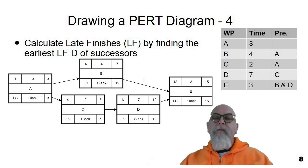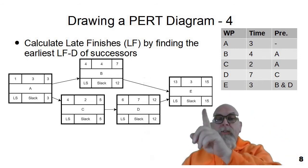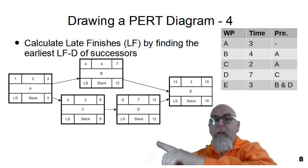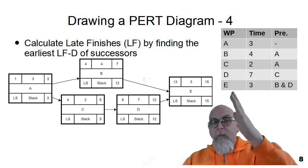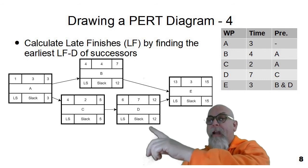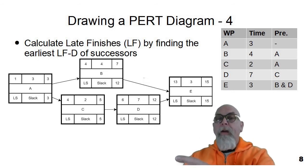To calculate the late finishes, we start at the end of the diagram and work our way backwards. So fifteen minus three would be twelve. And you see the twelve there and also the twelve up at B. Twelve minus seven would be five. You see that on C, five minus two is three. But when we do B, twelve minus four would be eight. So because we use the earliest of the successors, the earliest of the ones that come after, that would require us to take the five minus two on C and put that on A. So the late finish is three for A by working backwards through the network diagram.